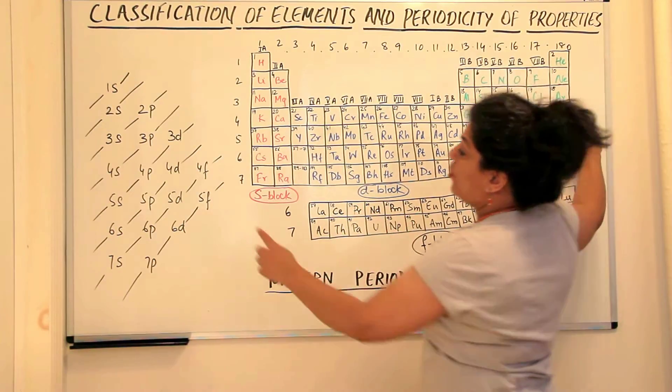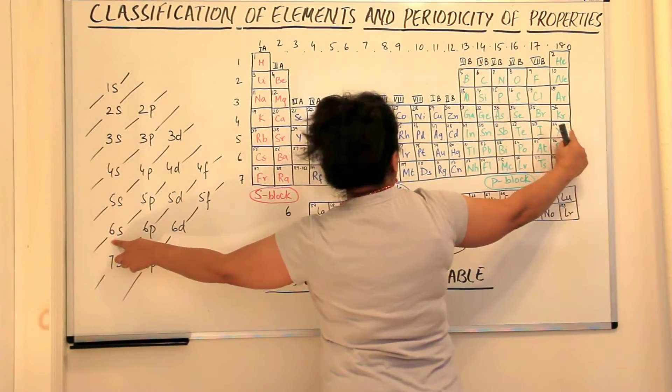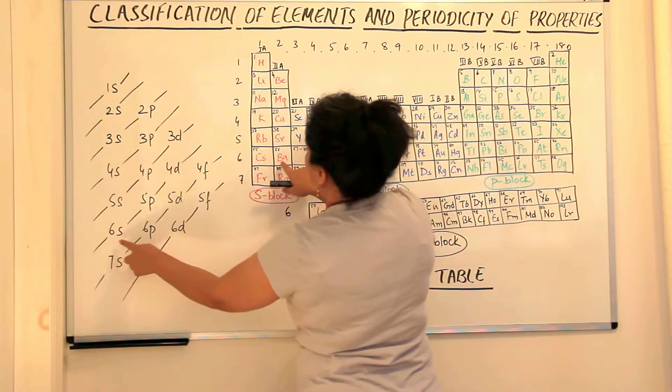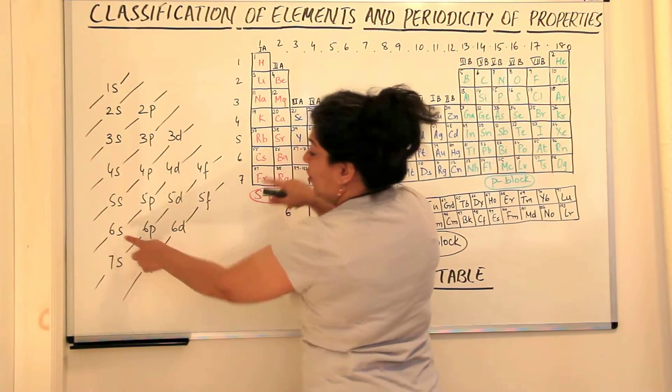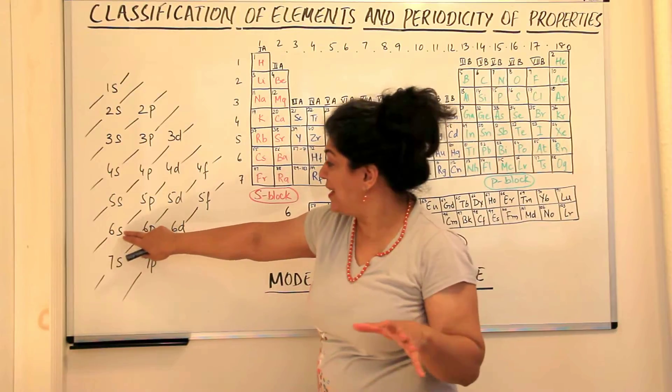Now the next two electrons should go to 6s, so after xenon, you have cesium and barium.